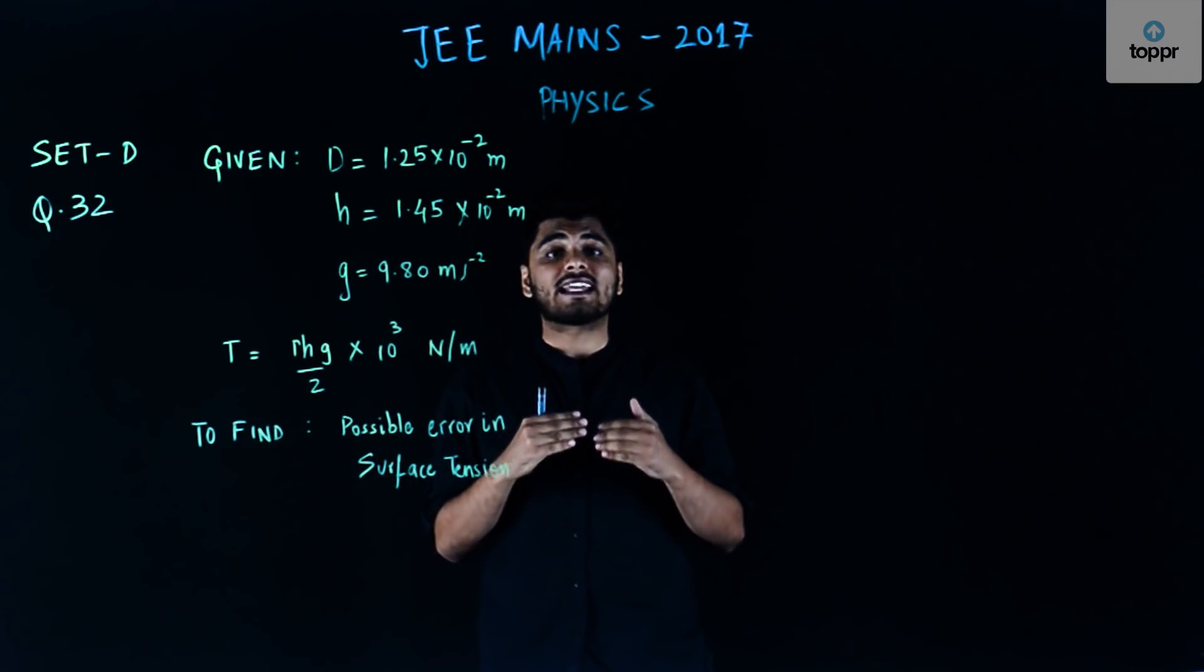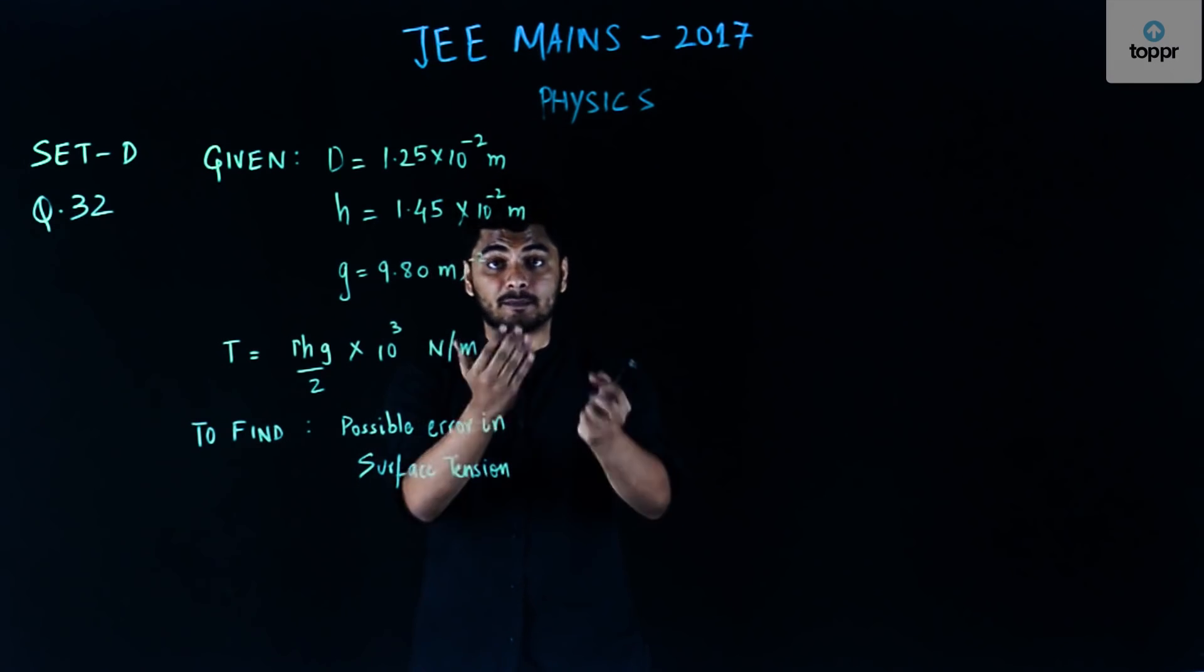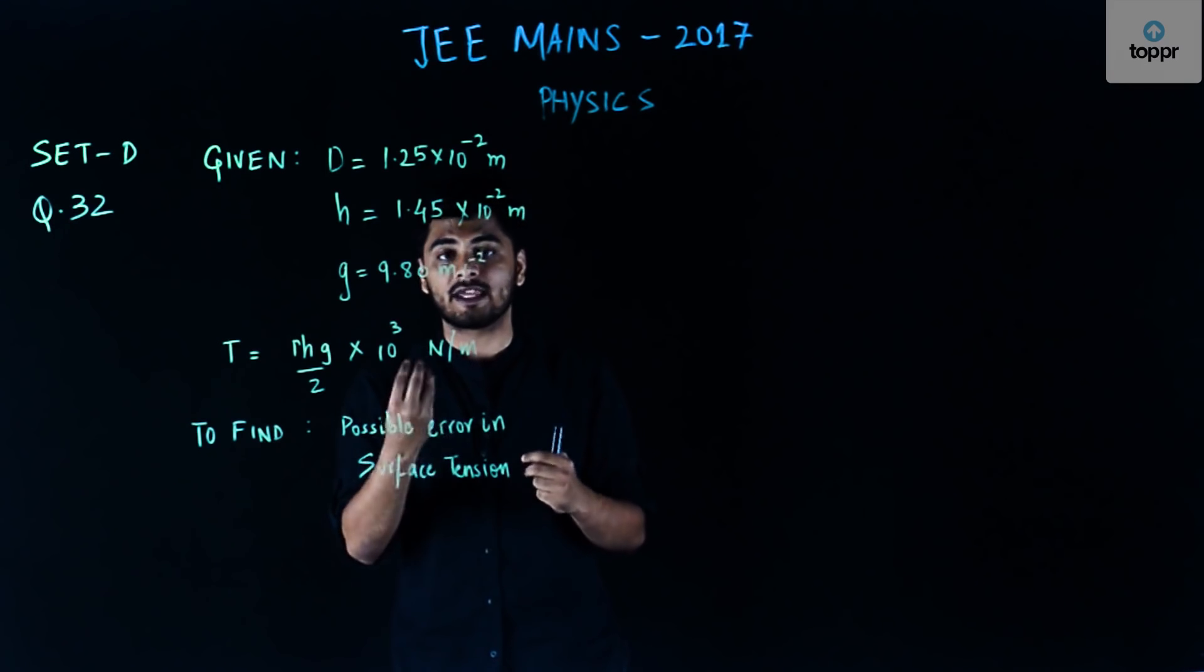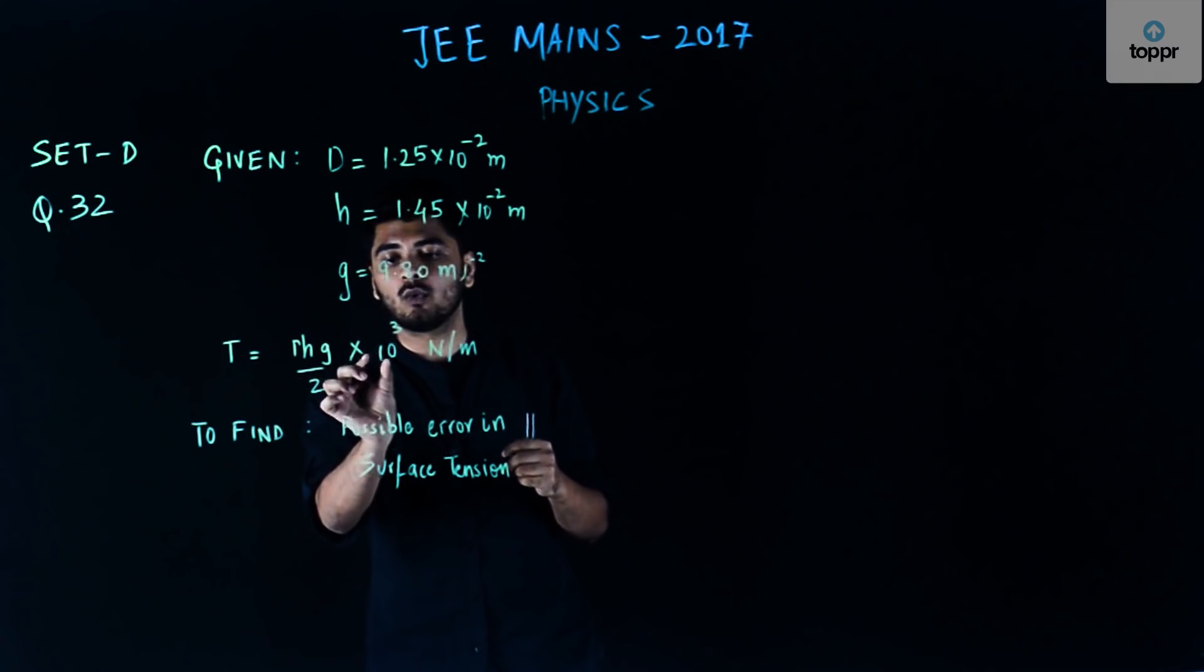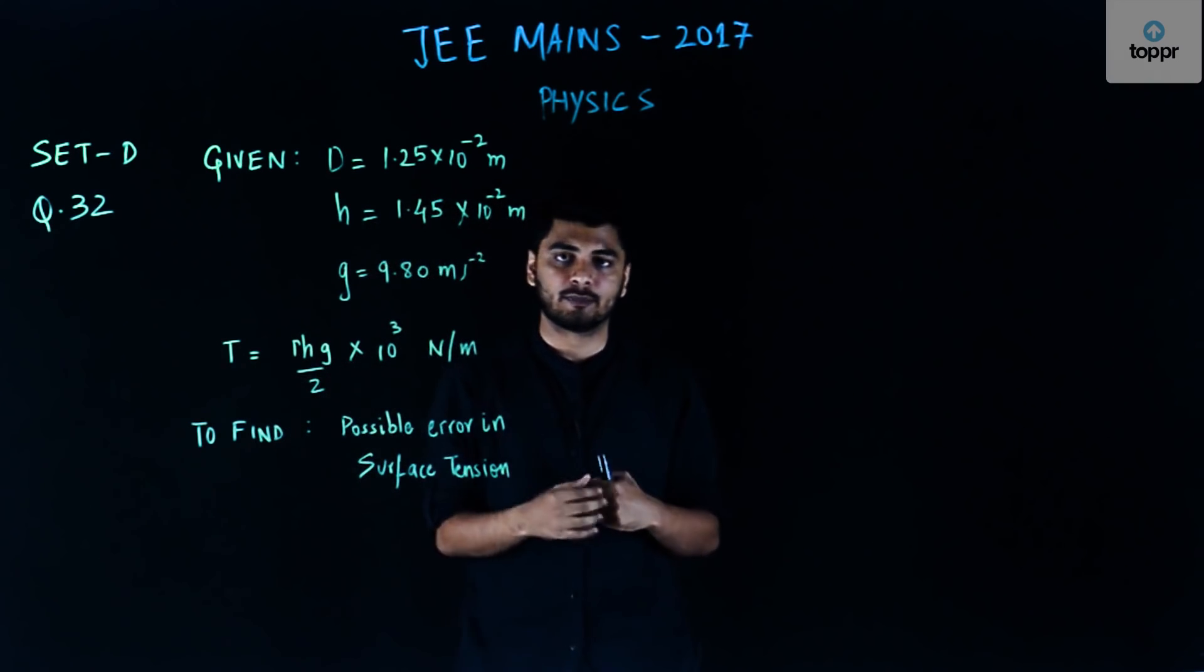Now in order to find the value of surface tension, a predefined or simple formula has been given to us. We have given this formula that is equal to RHG by 2 into 10 to power 3 Newton per meter.